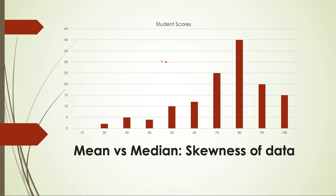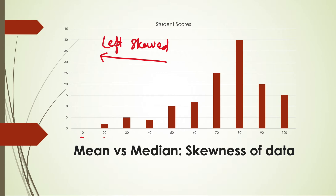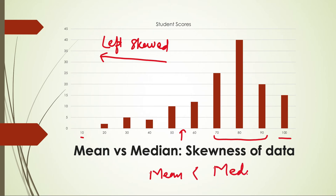Similarly, this is left-skewed data because there is a long left tail. This shows student scores where the maximum score is 100. There are very few students scoring low — no student scored 10, just two students scoring 20, very little at 30, 40, and 50. Most students are in the range of 70, 80, 90, and some scored 100. If we take the mean here, it would be lower — around 50 to 60 — because it gets pulled down by the low scores. So in the case of left skewness, mean is less than median.